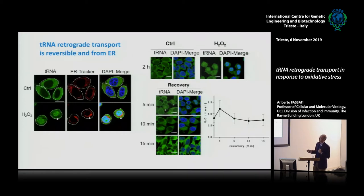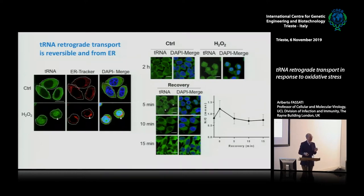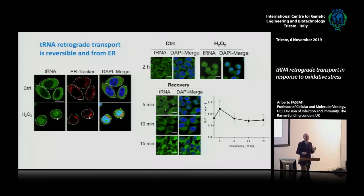This is truly retrograde transport rather than blocked exit, as quantification of cytoplasmic signal confirmed. We also did ER tracker labeling, which specifically marks the endoplasmic reticulum. In a double labeling experiment combining T-FISH and ER tracker, when H2O2-induced tRNA retrograde transport occurred, the most depleted region of the cell coincided with the ER. This suggests the tRNAs imported into the nucleus come preferentially from the ER rather than those diffused freely in the cytoplasm.